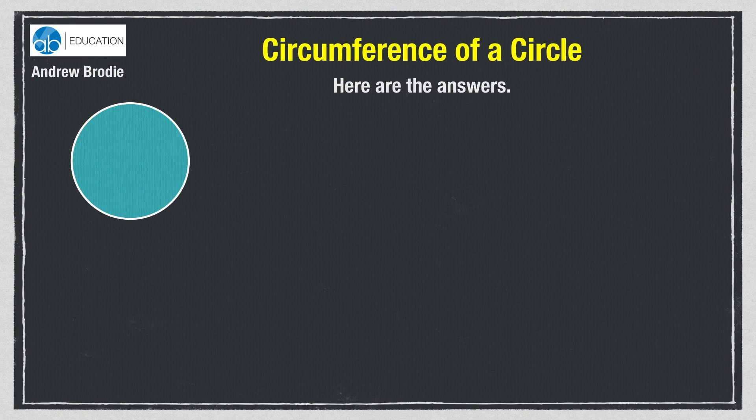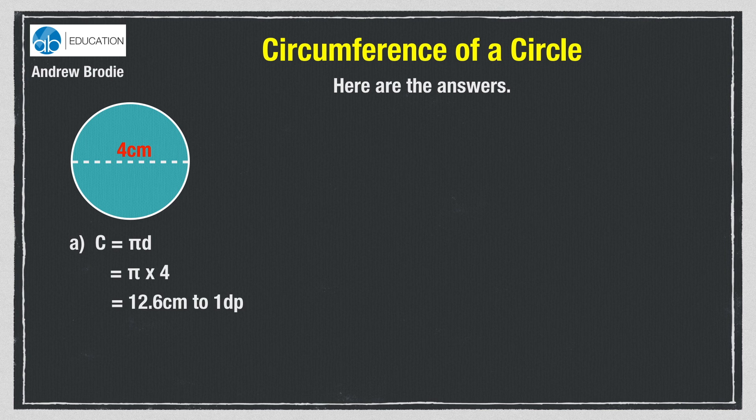Here are the answers. The first question said that the circle has a diameter of 4cm, so you can use the formula C equals πd to find the answer 12.6cm.